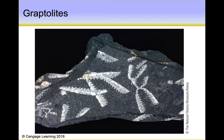We talked about graptolites — phylum Hemichordata, or class Graptolithinia. These are planktonic organisms and are quite common in Silurian and Devonian rocks, but they became extinct afterwards. They never made it past the Devonian.